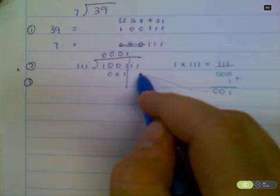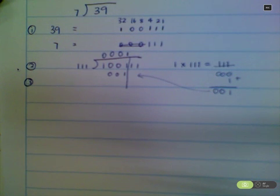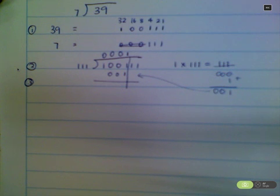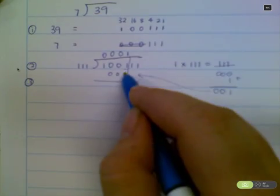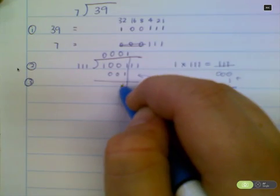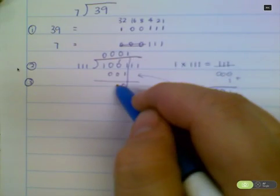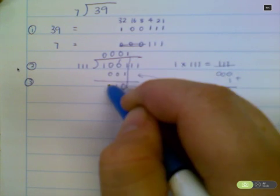Basically all I'm doing is transferring that number to there. Now, what I'm able to do is now I can add these together. So 1 plus 1 equals 0, carry the 1. 1 plus 0 plus 0 equals 1. 0 plus 0 equals 0.